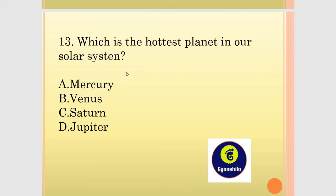Which is the hottest planet in our solar system? The options are Mercury, Venus, Saturn, and Jupiter. The answer is Venus, which is the hottest planet in the solar system.